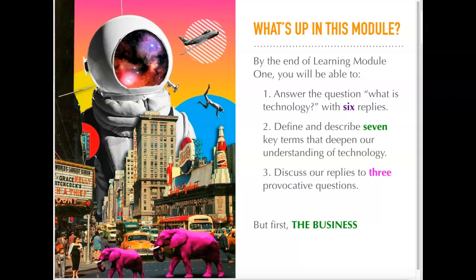For this module that covers the next two weeks of our time together, you are going to be doing the following three key points. You're going to be answering the question of what is technology with six different replies. You are going to be defining and describing seven key terms that will pop up in our discussion in this module, so you will be able to use those to deepen your understanding of technology. And finally we are going to respond to three provocative questions. And remember we are going to be also using our notebook as well.